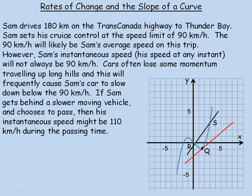However, his instantaneous speed — which is his speed at any instant, and that's what the speedometer will show you when you look at it — will not always be 90 km per hour. For example, cars often lose some momentum on long hills, and this could cause his car to slow below 90 km per hour.